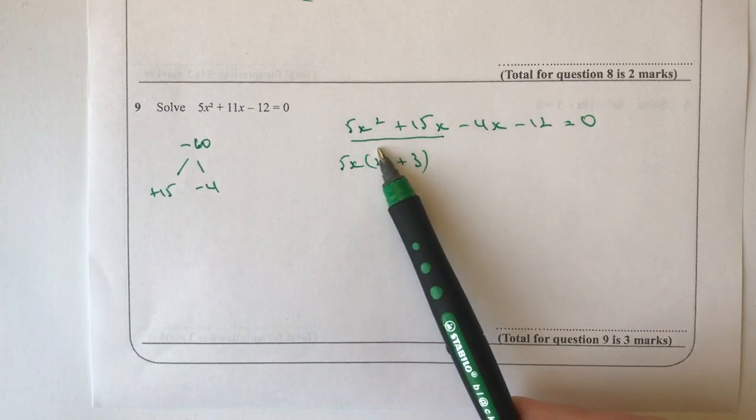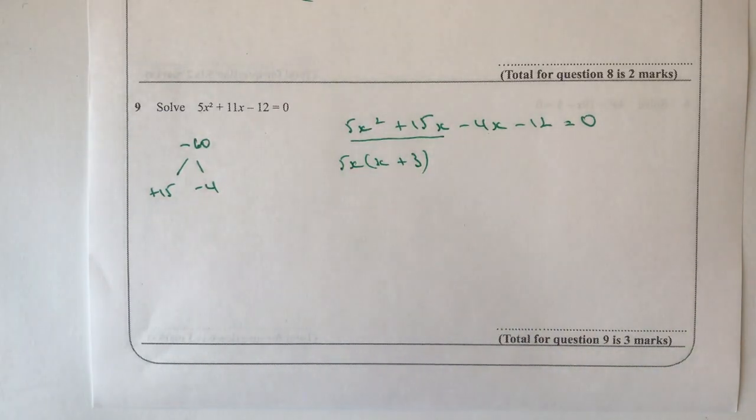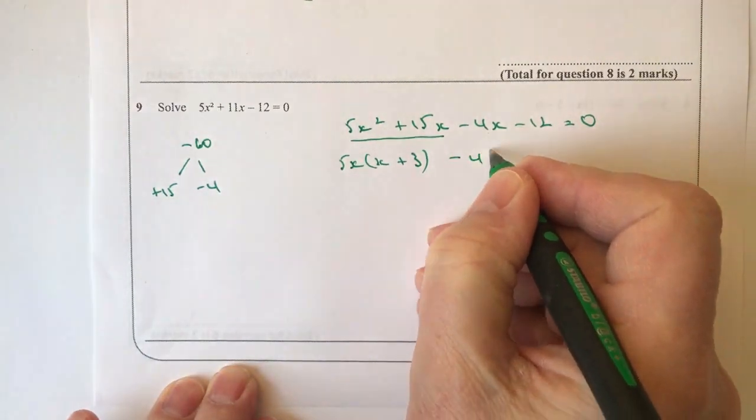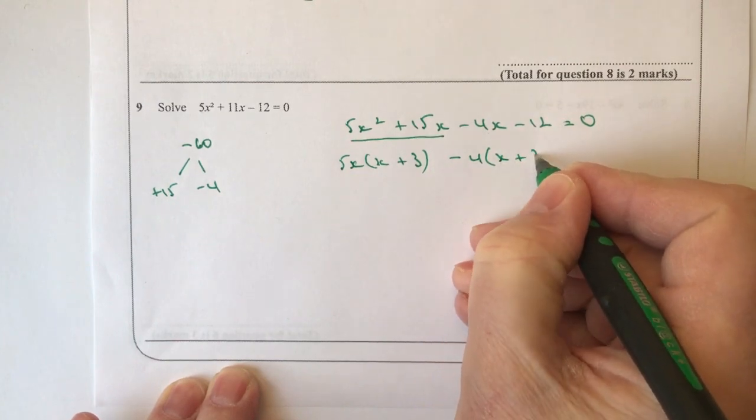So those first two terms I've now factorized, and I'm going to do exactly the same with the second two terms as well. I'm going to factorize those for minus four, and again I get (x + 3).